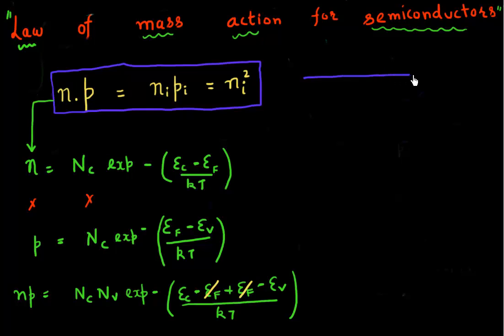We also know that Ec minus Ev is equal to the band gap. Let me draw the semiconductor band diagram here again. I have my conduction band here, my valence band here. So Ec minus Ev is just equal to the band gap, Eg.